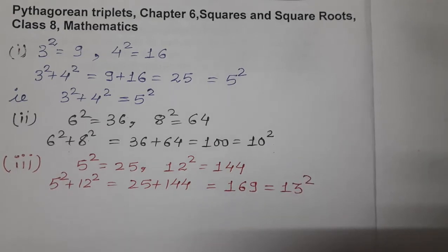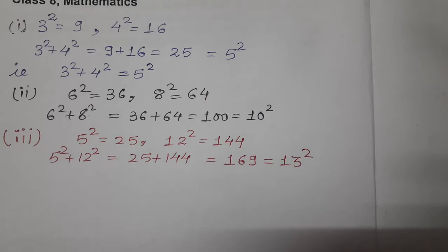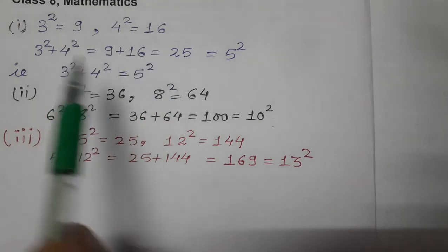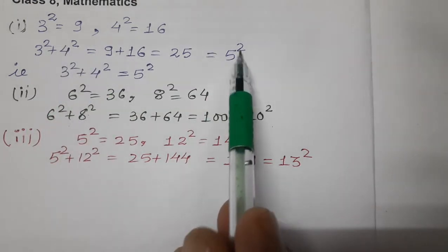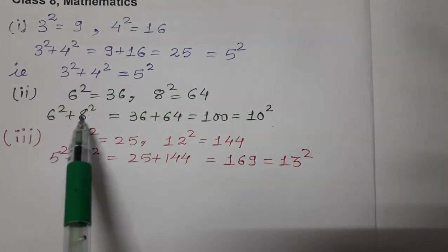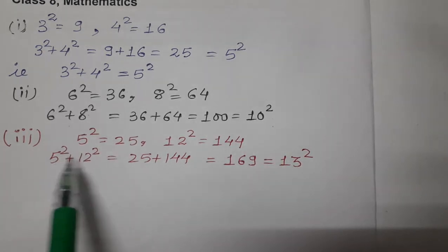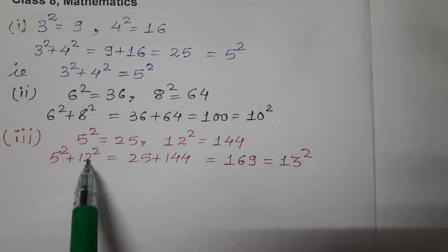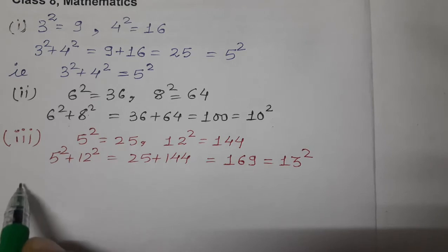Now what we are getting, see the result. The sum of the two square numbers equals to the third square. Sum of two square numbers equals to square of third number. Sum of the square of two numbers equals to the square of third numbers.